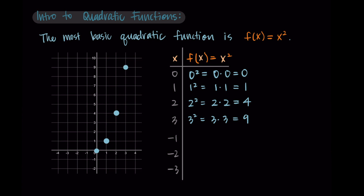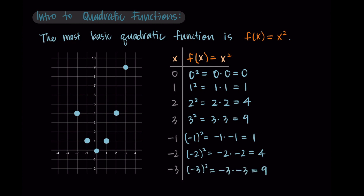Now for the negative inputs. For x = -1: (-1) squared = (-1) × (-1) = positive 1, giving point (-1, 1). For x = -2: (-2) squared = (-2) × (-2) = positive 4, giving point (-2, 4). Hopefully you notice the symmetry — negative inputs become positive, mirroring positive inputs. For x = -3: (-3) squared = (-3) × (-3) = positive 9, giving point (-3, 9).